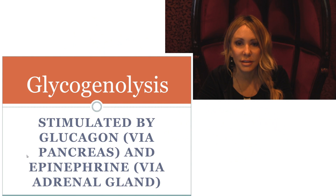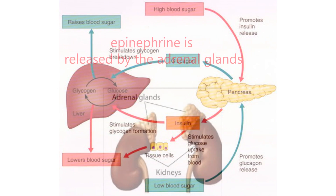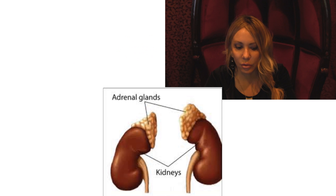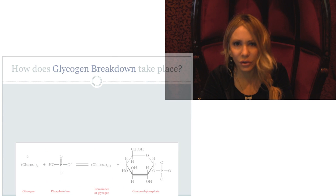We're going to be stimulating the breakdown of glycogen through a hormone called glucagon, secreted from the pancreas. Insulin is going to be the antagonistic hormone to that. We also have epinephrine being secreted from the adrenal glands, which lie on top of the kidneys. Epinephrine stimulates the sympathetic nervous system's fight-or-flight response, or simply when you need energy and your glucose is low.